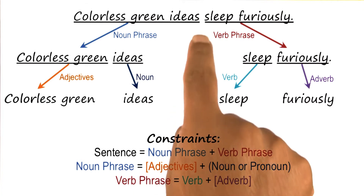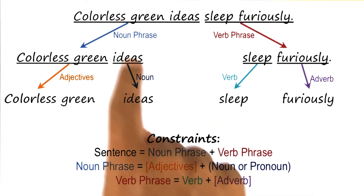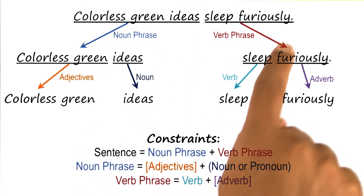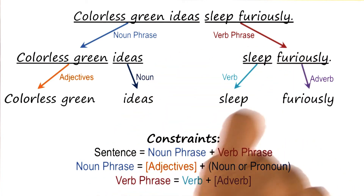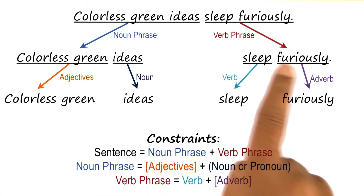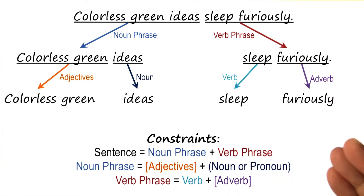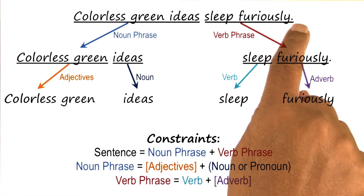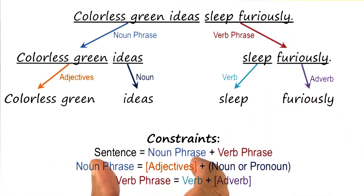Once we have done constraint propagation to derive the parse tree for the sentence, we can do additional processing. We can use this parse tree to support semantic analysis and build a semantic understanding of the sentence. Similarly in visual processing, once we have used the constraints for doing line labeling and recognized the surfaces and their orientations, we can then go further and recognize the object in its 3D form.